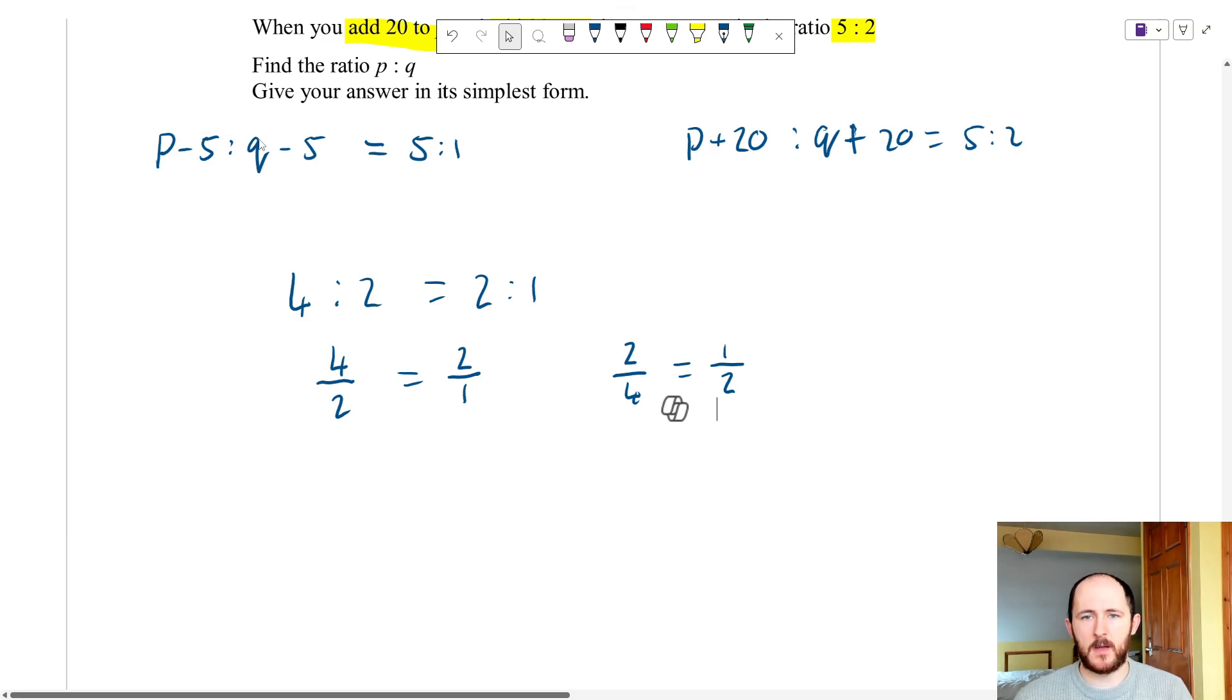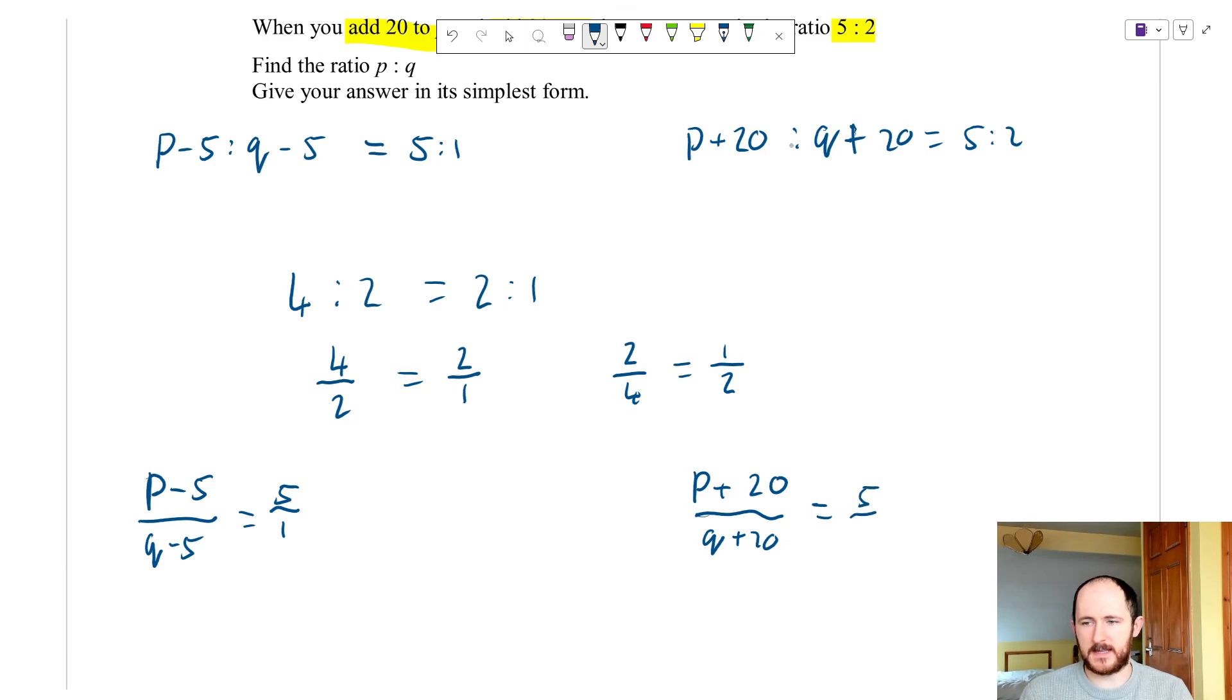So how can we use that in this case? Well as long as I'm consistent I can do p minus 5 over q minus 5 is equal to 5 over 1, or q minus 5 over p minus 5 is 1 over 5. What you can't do is just say p minus 5 equals 5, q minus 5 equals 1 because the ratio could have been simplified. In this case 4 is not equal to 2 and 2 is not equal to 1. We have p minus 5 over q minus 5 equals 5 over 1. I'll write it as 5 over 1 for now. For this one over here we're going to have the exact same thing. Already I've got two marks from writing the ratios and also writing them as fractions.